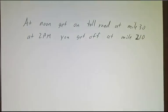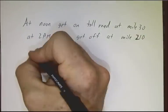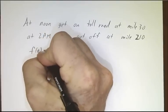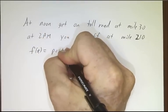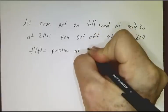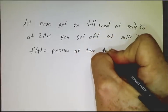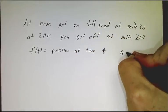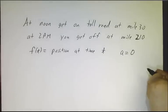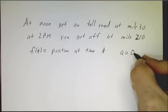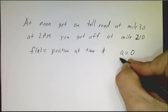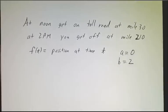What can you say about your speed along the way? So we say f(t) is the position at time t. And here a is 0 o'clock, 12 o'clock, and b is 2 o'clock.